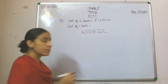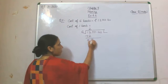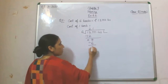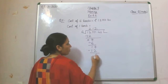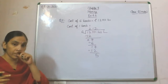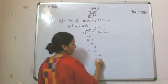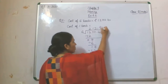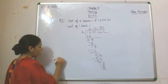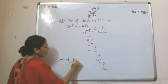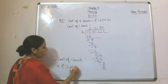Now start the division: 6 twos are 12, nothing remaining. 7 gets down. 6 ones are 6, 1 remaining. 7 gets down. 6 twos are 12, 5 remaining. We got the point, which goes into the quotient. 4 gets down. 6 nines are 54, nothing remaining. 0 gets down. 6 zeros are 0. The answer: therefore, cost of 1 book is rupees 212 and 90 paisa.